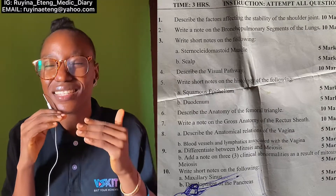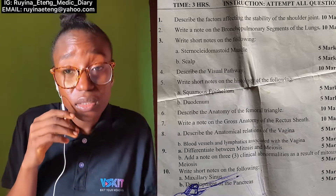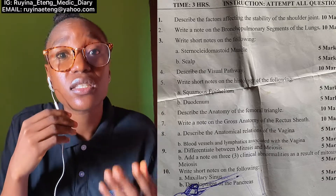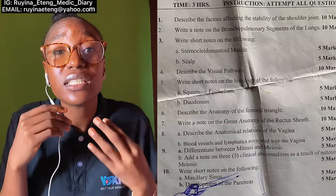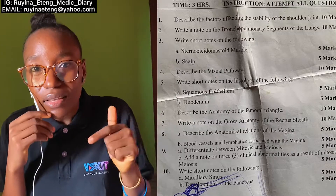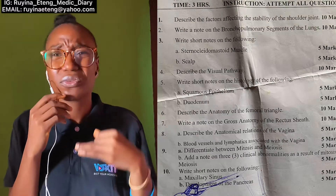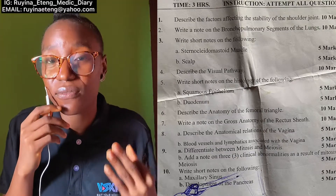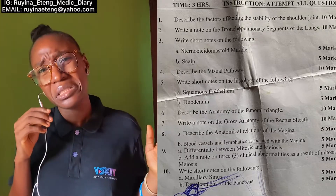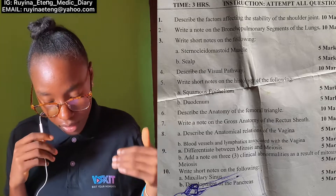For squamous epithelium, start with an introduction — mention it's a flat cell and other key details. Then draw a diagram. After that, classify it: there's simple squamous and stratified squamous; under stratified squamous there's keratinized and non-keratinized. Explain why each type is called what it is. Under each classification heading, note its functions and where it is found. Histology is straightforward. If you can draw diagrams of each classification, that would also be excellent.